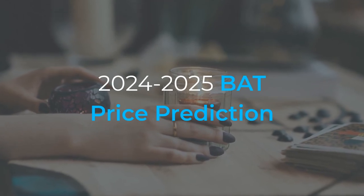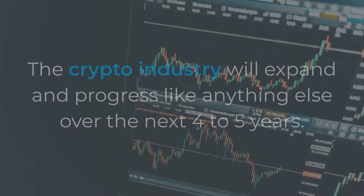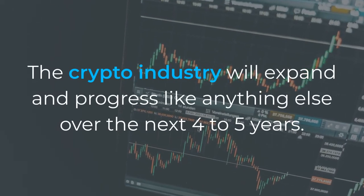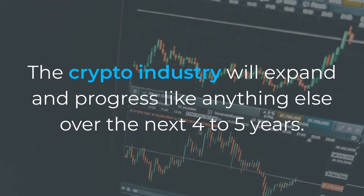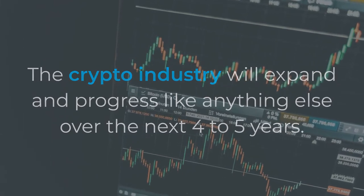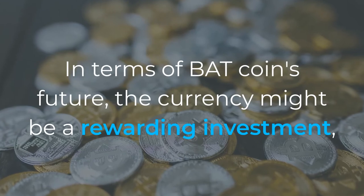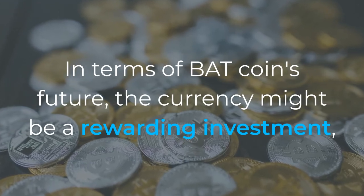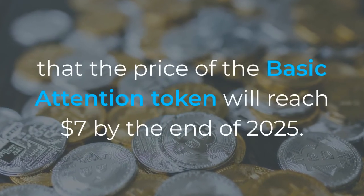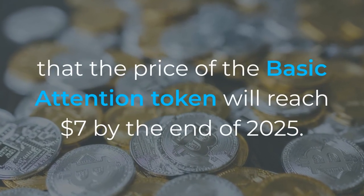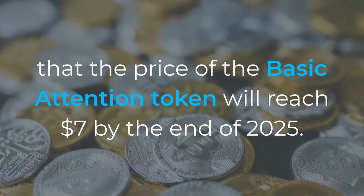2024–2025 BAT price prediction. The crypto industry will expand and progress over the next four to five years. In terms of BAT coin's future, the currency might be a rewarding investment, with market projections predicting that the price of the Basic Attention Token will reach $7 by the end of 2025.